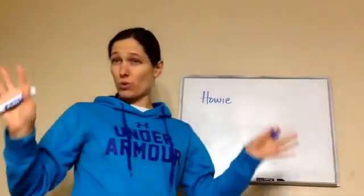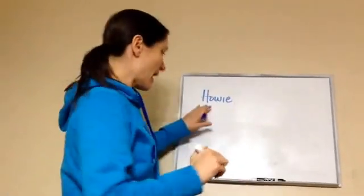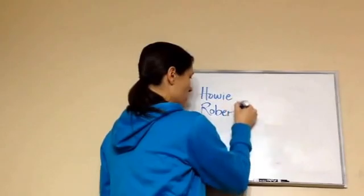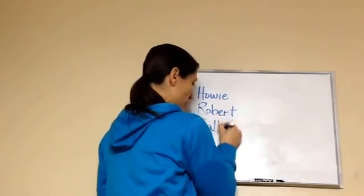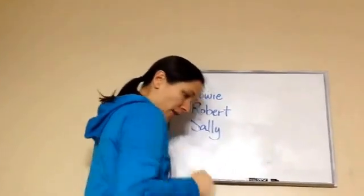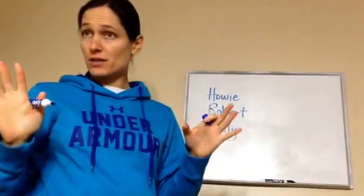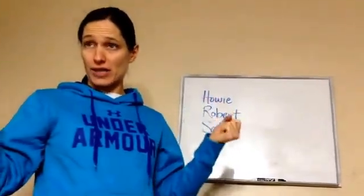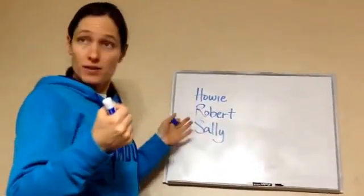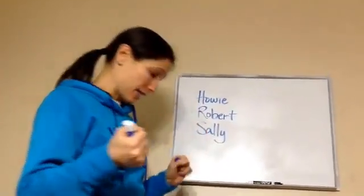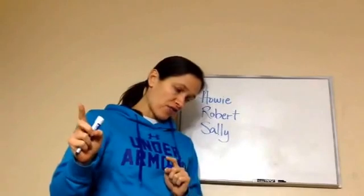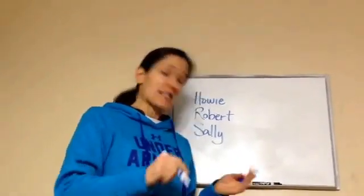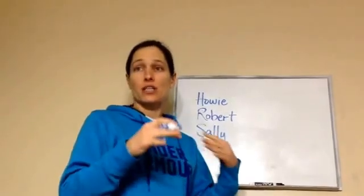I'm going to write down the most important information so far. Howie, Robert, and Sally are the three people mentioned. There was only one definite number that tells us how old someone is. Howie is five years older than Robert. Robert is three years older than Sally. Sally is 15 years old.